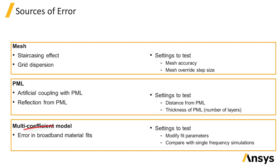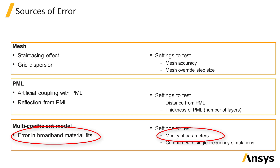The error in material fitting may not be included as part of the convergence testing process since it can typically be reduced by modifying the material fitting parameters before running any simulations. Changing the material fit does not typically cause any increase in simulation time. Material fitting parameters can be set in the material explorer window from the materials button in the main toolbar. You can review the details about material fitting in the material properties section of this course.